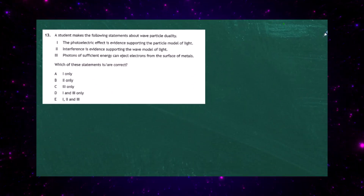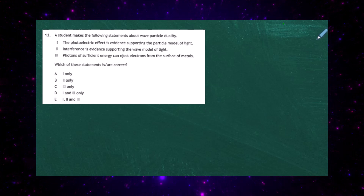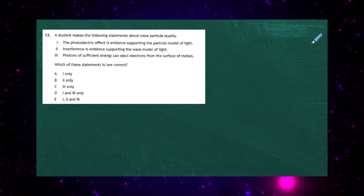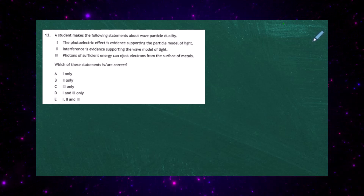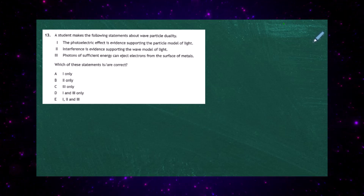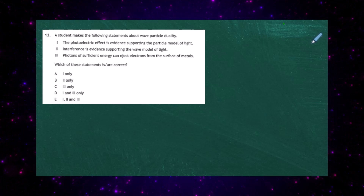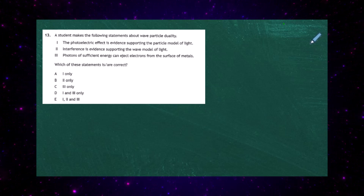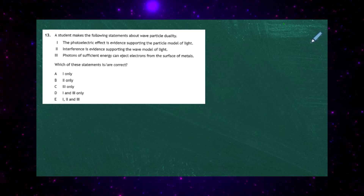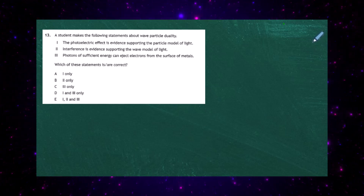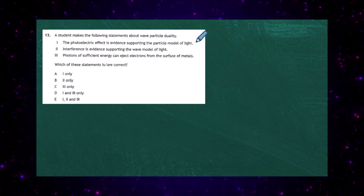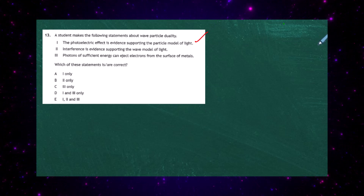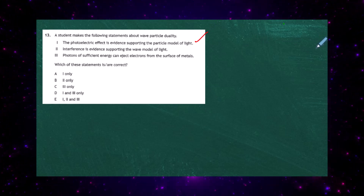Question 13 from the 2023 Physics Higher Paper 1. A student makes the following statements about wave-particle duality: Statement 1 — the photoelectric effect is evidence supporting the particle model of light. Statement 2 — interference is evidence supporting the wave model of light. Statement 3 — photons of sufficient energy can eject electrons from the surface of metals. Statement 1 is true because only particles can knock off other particles; waves can't knock particles off the surface of anything.